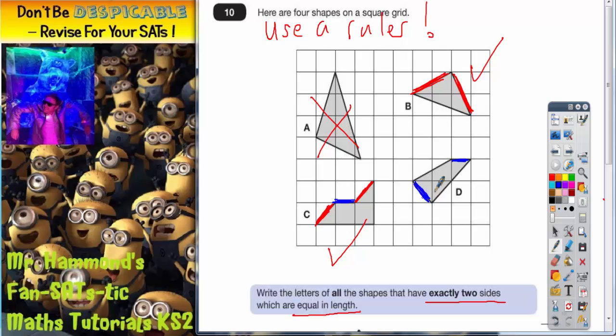The slanted one is slightly longer than the horizontal one and you should also find that the two slanted lengths there in red are also slightly different. So we are not interested in shape D.